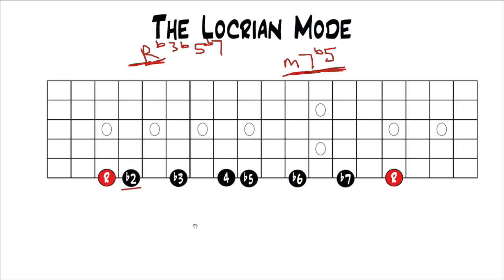Just like always, the root, flat 3, and flat 5 are your chord tones over a triad, so those are going to be your strongest sounding tones. And then the flat 7 over a minor 7 flat 5. But this flat 5 is pretty dissonant, unlike a perfect 5th, so don't expect it to sound as consonant as if you're playing root, 3, 5 over a minor or major triad.